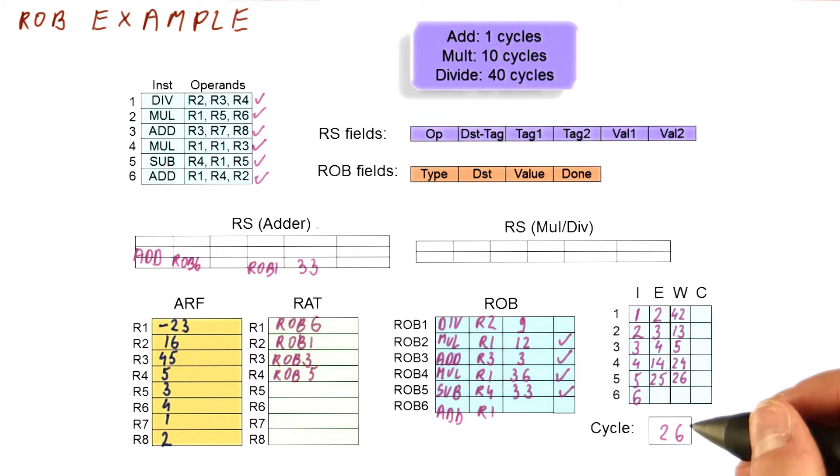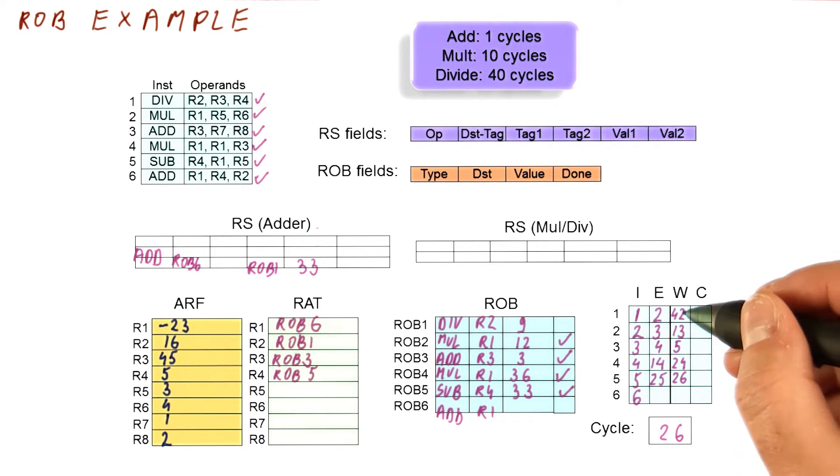So in cycle 27, nothing happens. 28, nothing happens. In fact, the first time when something does happen from now is going to be cycle 42 when the result of ROB1 is broadcast. So let's just fast forward there.